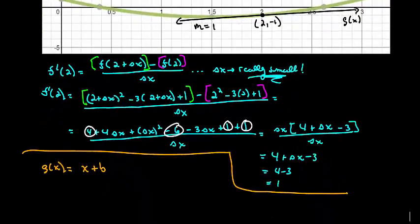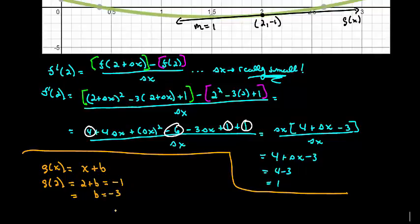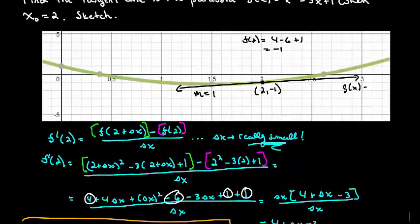So that means down here, when we plug in 2, that's supposed to be equal to -1. So clearly, b here is -3.